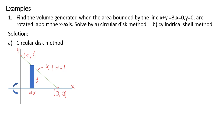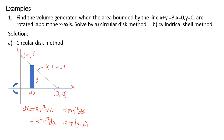For letter A, using the circular disk method: dV equals pi r squared dx. Since r equals y, this becomes dV equals pi y squared dx. Given that x plus y equals 3, we have y equals 3 minus x, so dV equals pi times (3 minus x) squared dx.